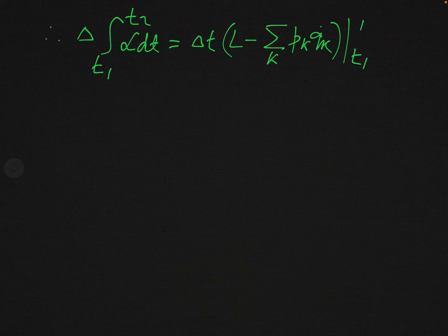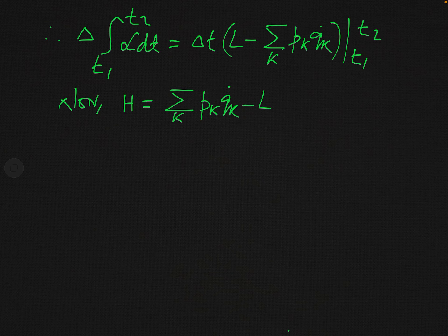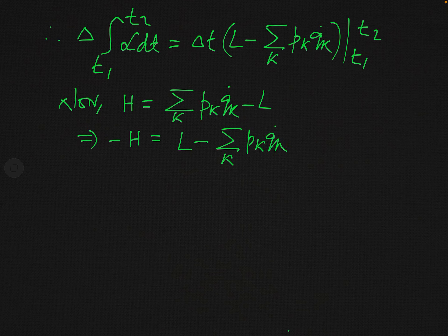In the case of a conservative system, summation over k of p_k q_k dot equals 2T, where T is kinetic energy. Therefore, the above expression can also be written as: capital Delta integral from t1 to t2 of 2T dt equals zero. This is another form of the principle of least action, and it shows how we proved or derived this principle.